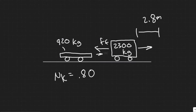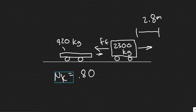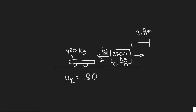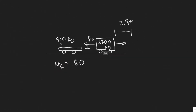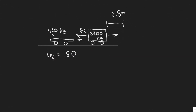The thing that's going to cause them to stop after colliding is going to be the force of friction. The coefficient of kinetic friction is 0.8. This is going to be a multi-step problem — we're going to use a couple of rules.